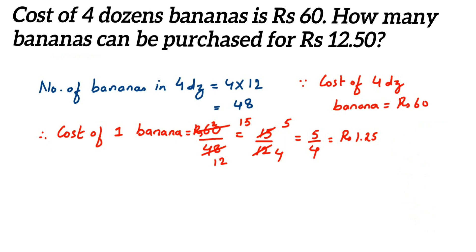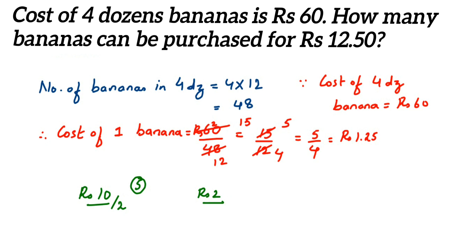Now the question is how many bananas we can purchase for 12 rupees 50 paise. Suppose you have 10 rupees and you want to purchase chocolates, and the cost of one chocolate is rupees 2. How many chocolates can you purchase for 10 rupees? You divide 10 by 2 and get 5, so you can purchase 5 chocolates for 10 rupees where each chocolate is 2 rupees.